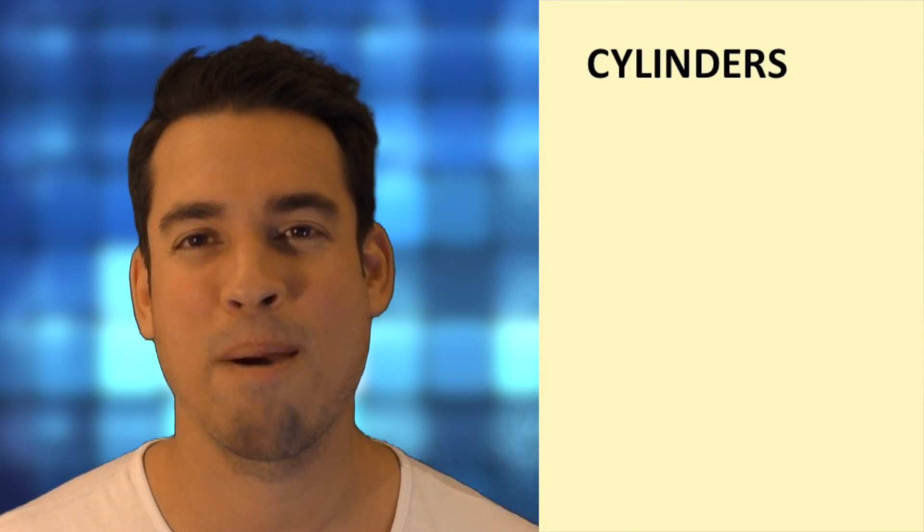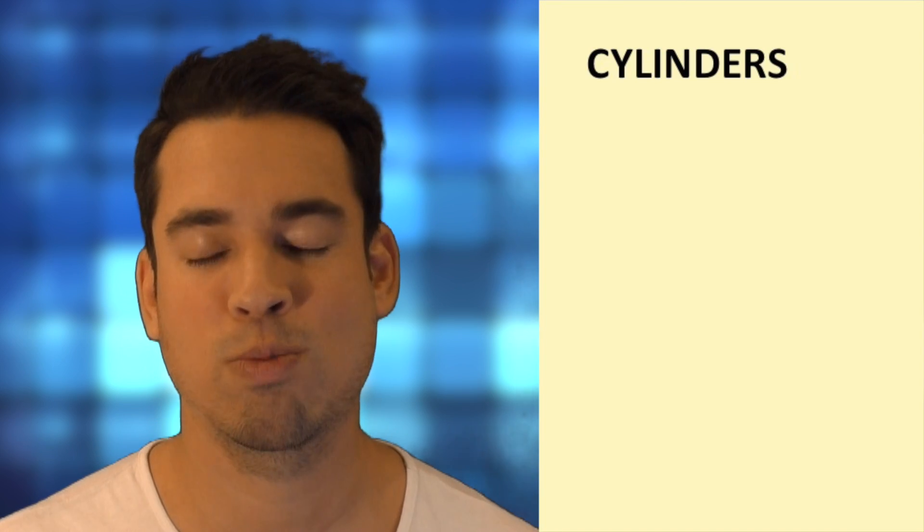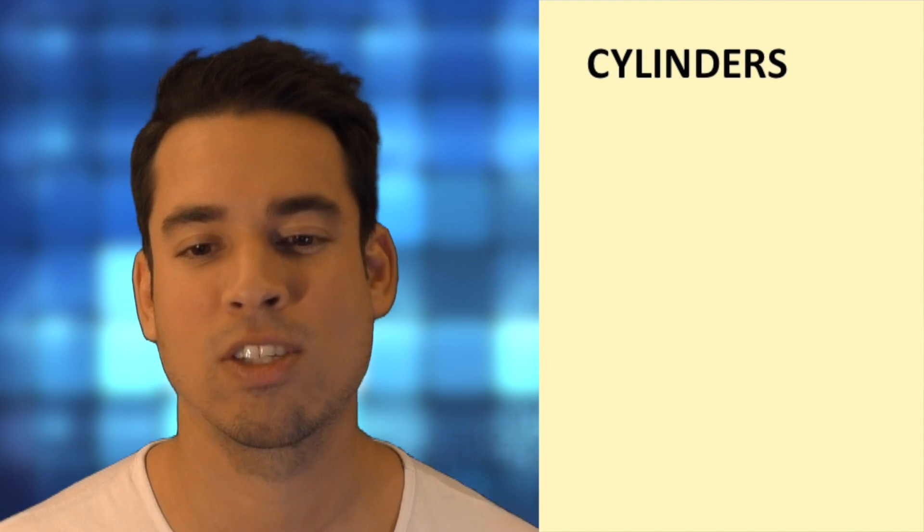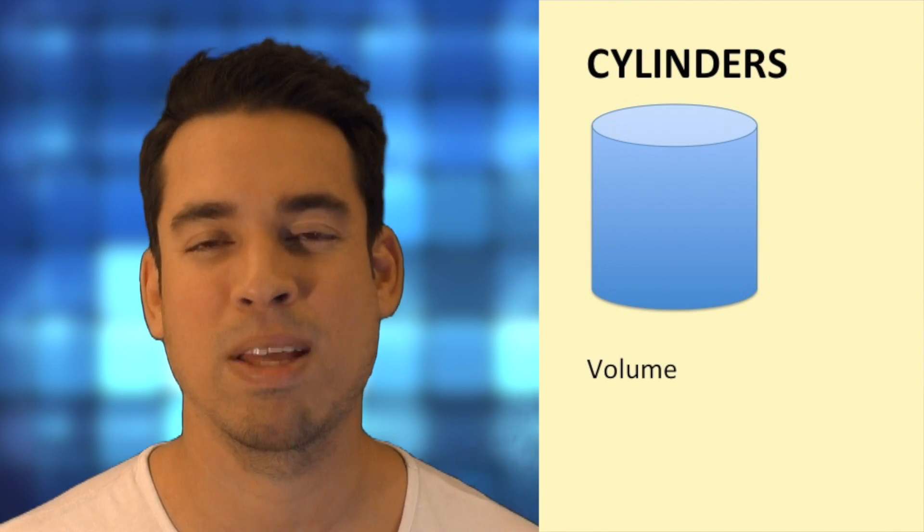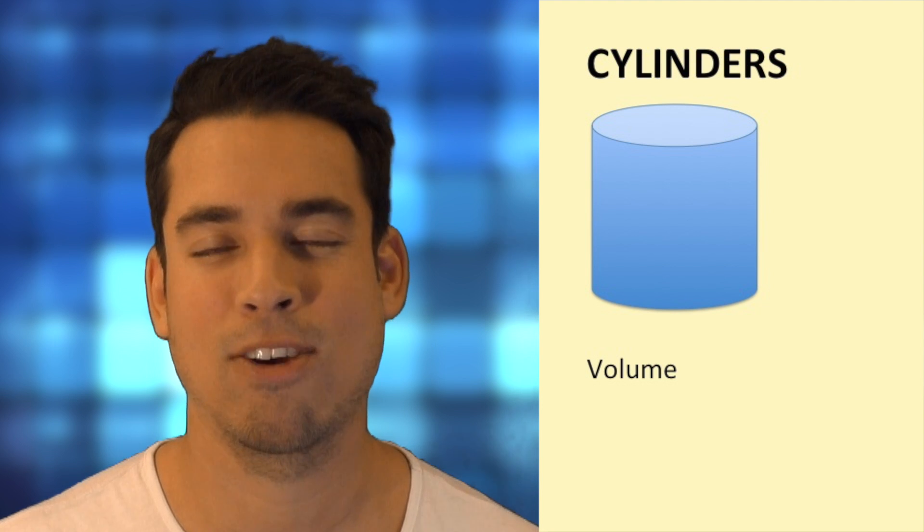Now let's talk about cylinders, and we're specifically talking about right cylinders. A right cylinder is like a can of coke, it's a circle at the top and the bottom and straight up and down on the sides.